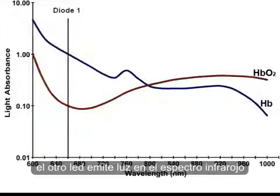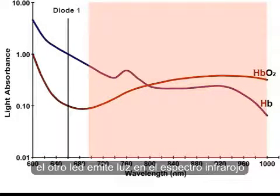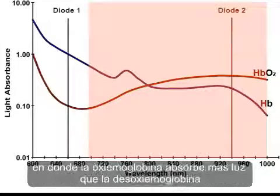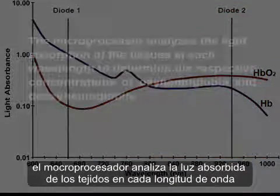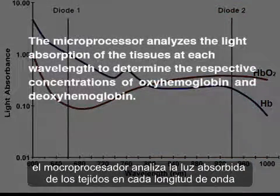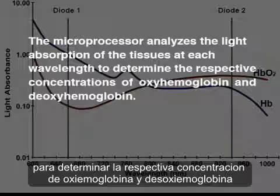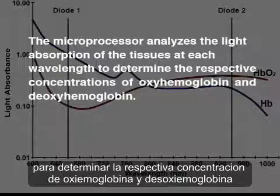The other diode emits light in the infrared spectrum at a wavelength of 940 nanometers, at which oxyhemoglobin absorbs more light than deoxyhemoglobin. The microprocessor analyzes the light absorption of the tissues at each wavelength to determine the respective concentrations of oxyhemoglobin and deoxyhemoglobin.